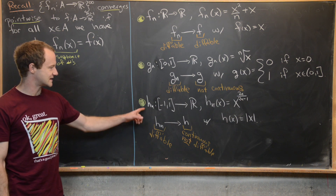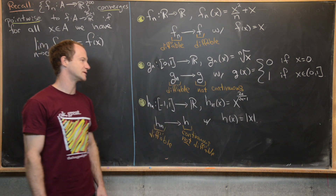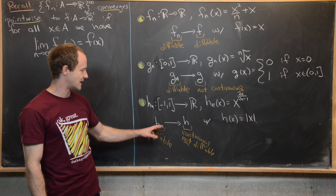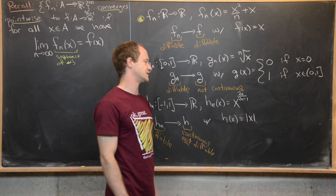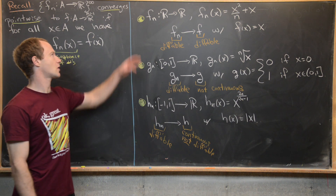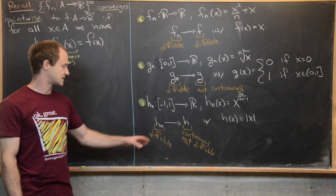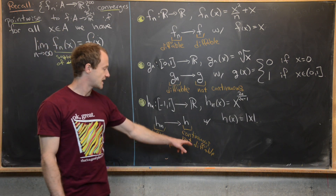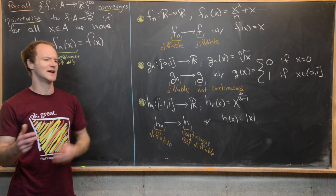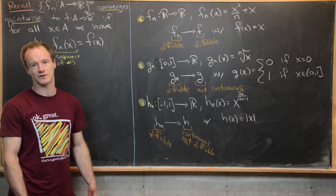Finally, we looked at h_n from the interval [-1,1] to ℝ, where h_n(x) = x^(2n) / (2n - 1). We showed h_n converges pointwise to h(x) = |x|. This is a little better than the g_n example but not as good as the first: every function in the sequence was differentiable, but the limit — the absolute value function — is continuous but not differentiable at zero.